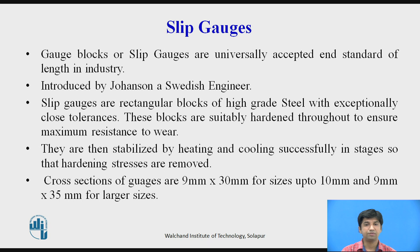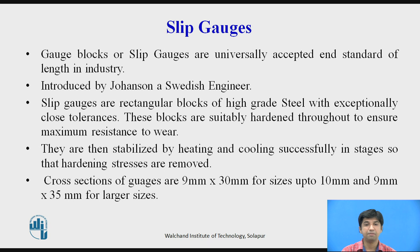Slip gauges are also made from tungsten carbide, which is extremely hard and wear resistant. The cross section of these gauges is 9 mm × 35 mm for sizes up to 10 mm, and 9 mm × 35 mm for larger sizes. Any two slip gauges when perfectly clean may be rung together, and the dimensions are permanently marked on one of the measuring faces.